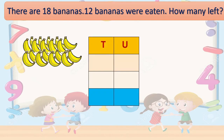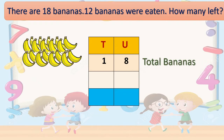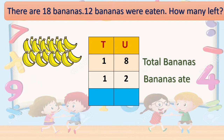Out of them, you will write 18 here — that is the total bananas. 12 bananas were eaten, so you write 12 below. You have to write it like this. So we are going to subtract 12 from 18.